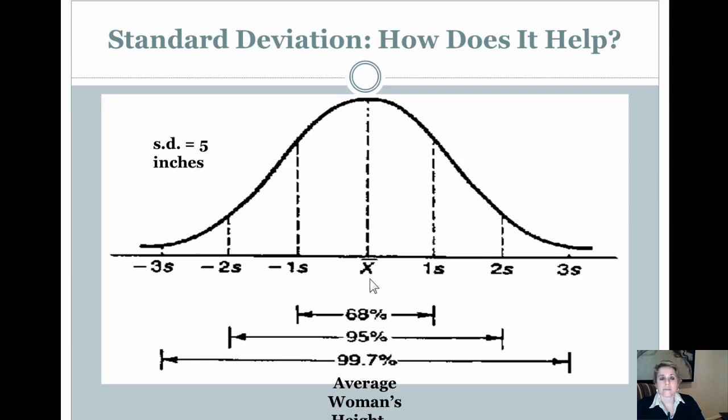That means that 68% of all women's height fall between 5 feet and 5 feet 10 inches. 95% fall between, what did I say, two standard deviations, so 10 inches below 5 feet 5, and 10 inches above 5'5". Let me even think of my math. I won't even go there because I'm sure you can work with me.